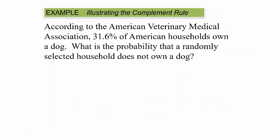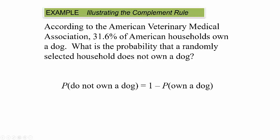According to the American Veterinary Medical Association, 31.6% of American households own a dog. What is the probability a randomly selected household does not own a dog? That's the complement: P(not own a dog) = 1 − P(own a dog) = 1 − 0.316 = 0.684.